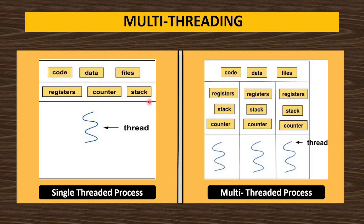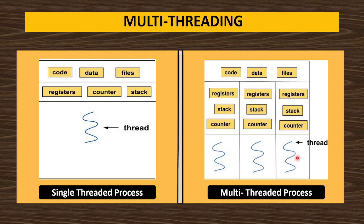Then we have the multi-threaded process. A multi-threaded process means one process will have many threads inside the main memory. The process is divided into threads. These threads are similar to a process but smaller in size — parts of the process are made, so one part is called one thread, second part is called second thread, and third part is called third thread. So there are three threads of this one process.